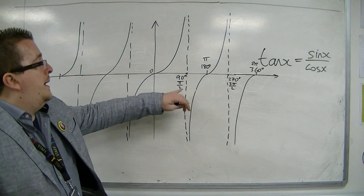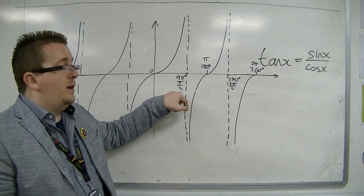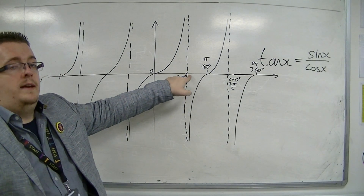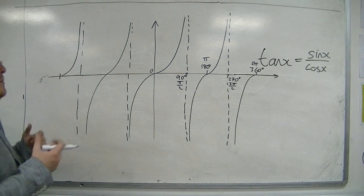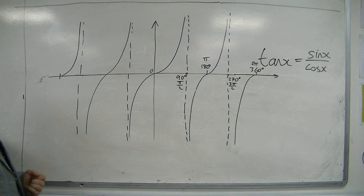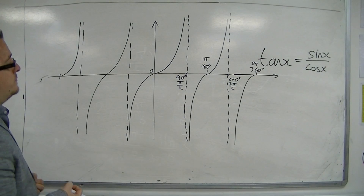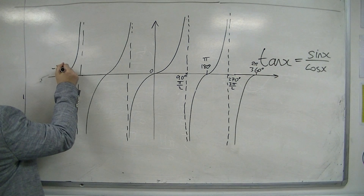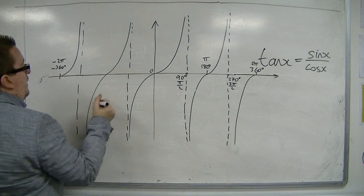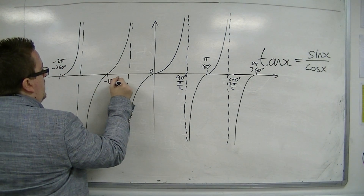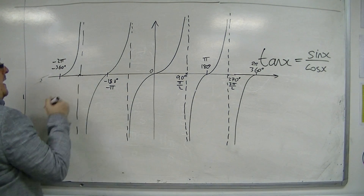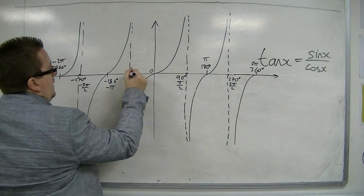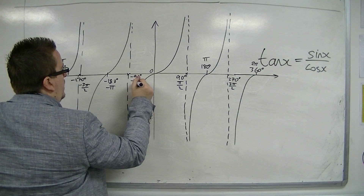When you're looking at cos of pi over 2, or cos of 90 degrees, cosine is zero. And that means you've got zero on the bottom of the fraction, which creates that asymptote, because you can't divide by zero. And then you've got the reverse over the other side. So we've got minus 360 degrees, which is minus 2 pi; minus 180 degrees, which is minus pi; minus 270 degrees, so minus 3 pi over 2; and minus 90 degrees, or minus pi over 2.